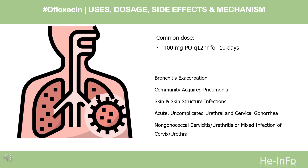Complicated UTIs: 200 mg, PO Q12HR, for 10 days. Prostatitis due to E. coli: 300 mg, PO Q12HR, for 6 weeks. Traveler's diarrhea (off-label): 300 mg, PO Q12HR, for 1 to 3 days.